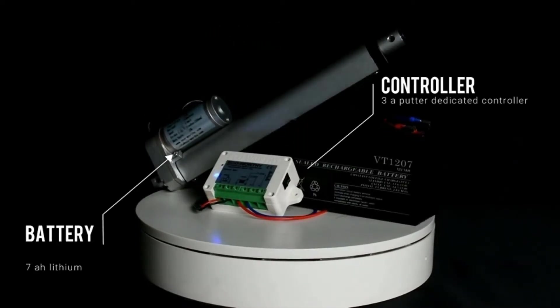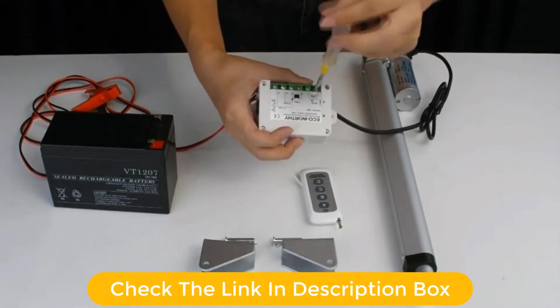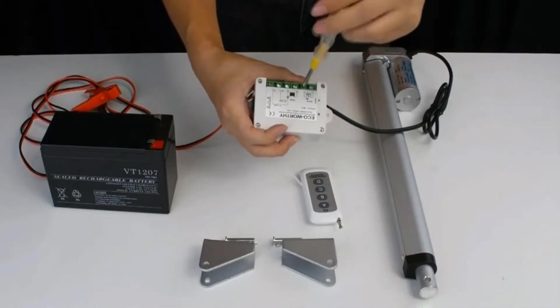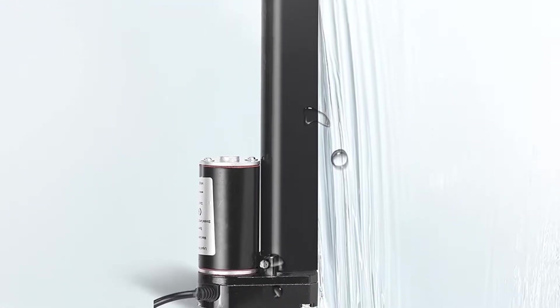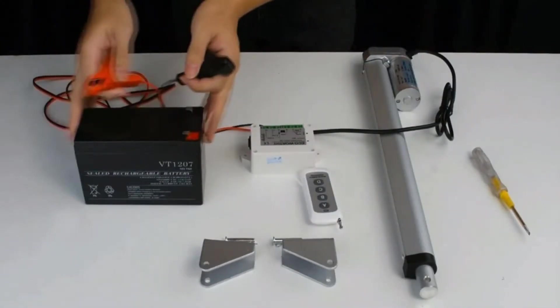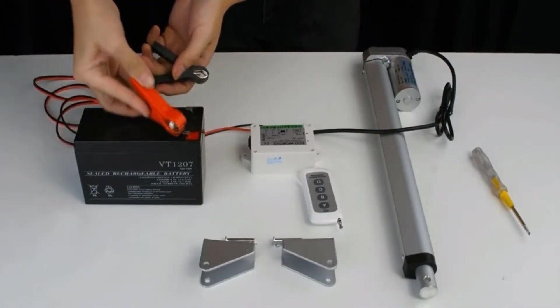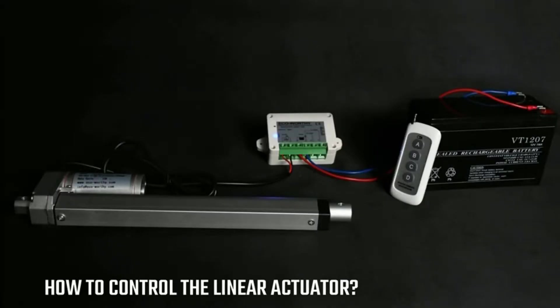This linear actuator motor is suitable for a wide range of industries that include electric power, chemical industry, construction, mining, lifting, petroleum, chicken coop door, and others. It is made up of aluminum alloy housing which makes them durable. It comes with an internal switch which turns off automatically in case of motor idling. It has an IP54 rating which provides protection against water, dust, and corrosion.